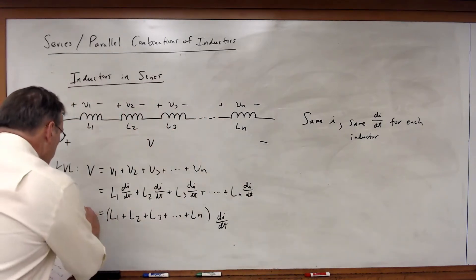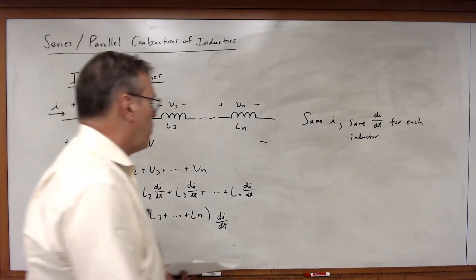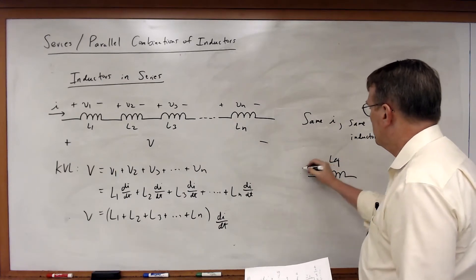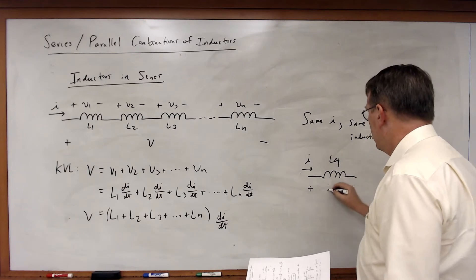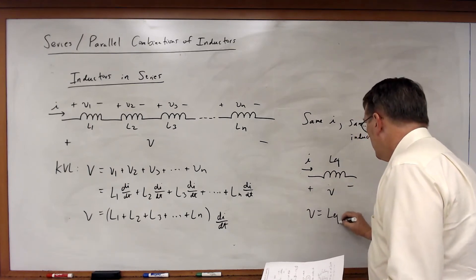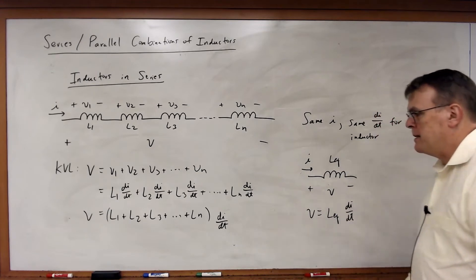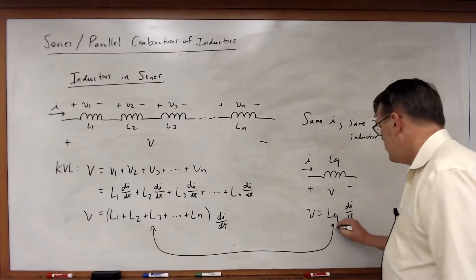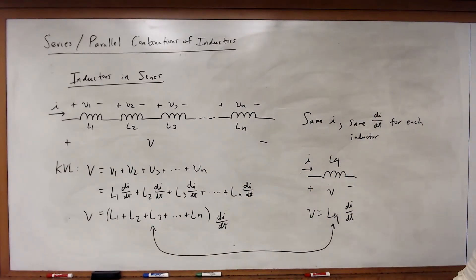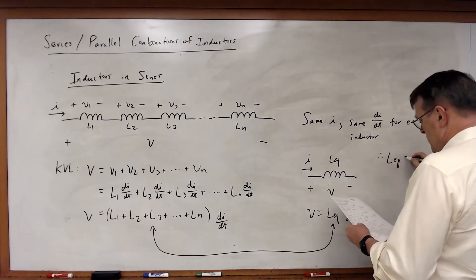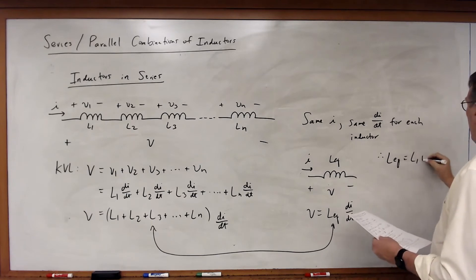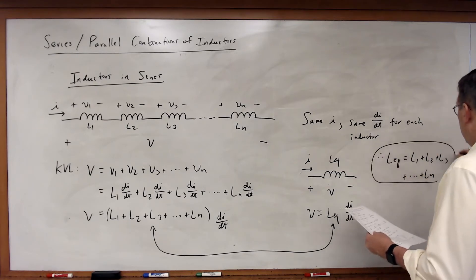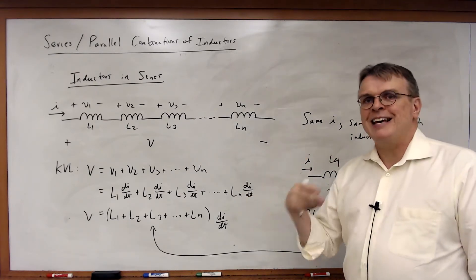This is equal to (L1 plus L2 plus L3, all the way to L sub N) times di/dt. That's the voltage across our entire inductor array. If we want to replace this with a single equivalent inductor with the same current and the same voltage, then V equals L-equivalent times di/dt. For these to be equal, L-eq must equal L1 plus L2 plus L3, all the way to L sub N. In other words, inductors in series add together.